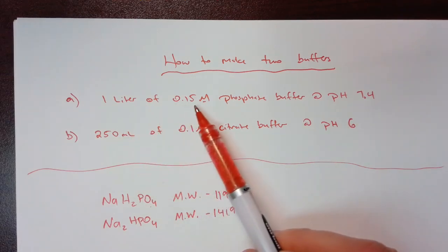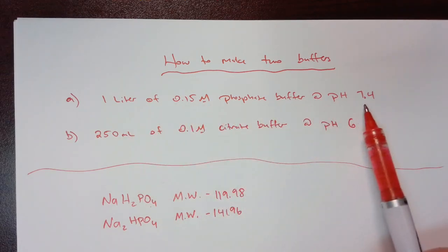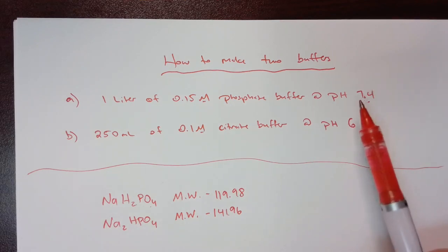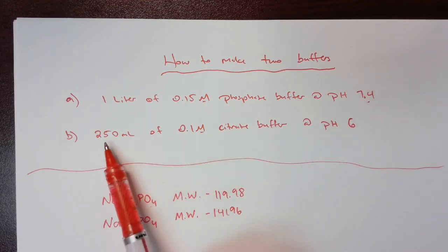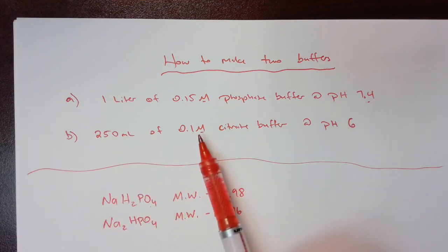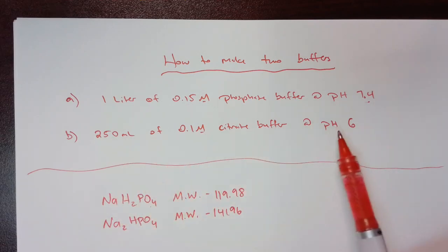The first one is 1 liter of a 0.15 molar phosphate buffer at a pH of 7.4, which is very typical for any biochemical applications. And then the second one is 250 milliliters of a 0.1 molar citrate buffer at a pH of 6.